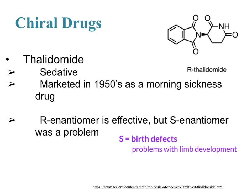Thalidomide is still used in some cases today. They tried giving just the R enantiomer to avoid the harmful S, but studies found that your body can metabolize and convert the R into the S. So this drug can never be safely given to a pregnant woman or a woman who could become pregnant — which is a warning you'll see on certain drugs. It can be used in other contexts and for some animal anesthetics. This is why having the FDA to study these things and keep watch is so important.